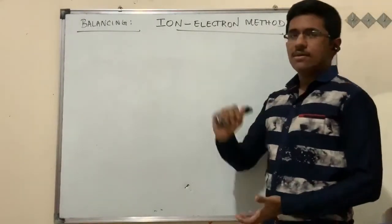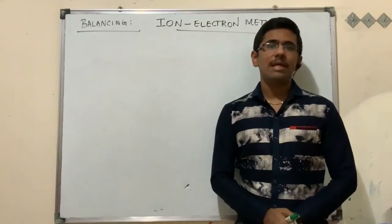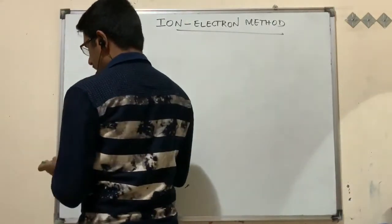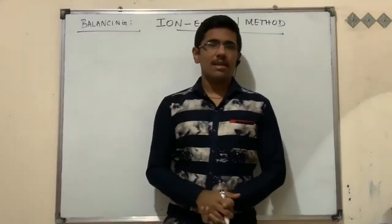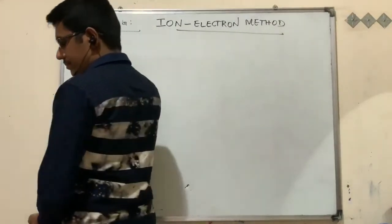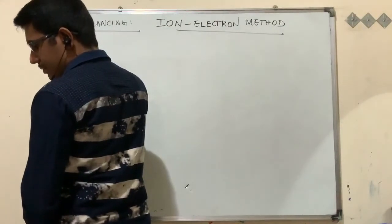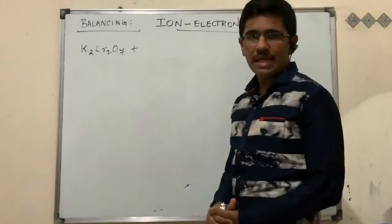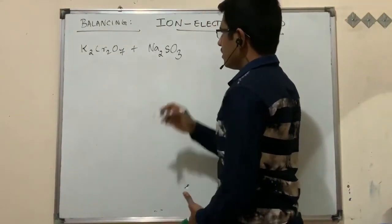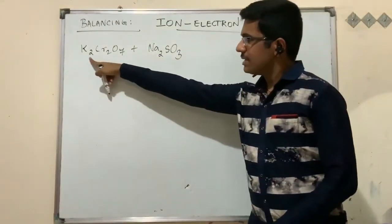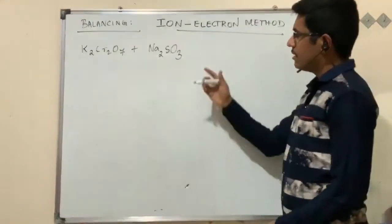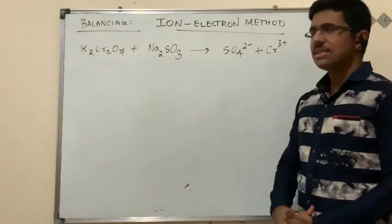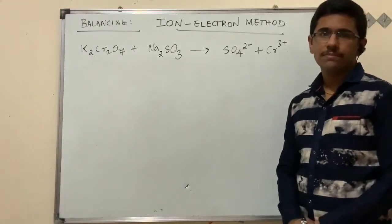We are going to see the ion-electron method using a particular example. In this type of balancing, we mainly use electrons and ions carrying charges. We'll start with problem number 8.8 from your example section. The question is to balance a chemical reaction using the ion-electron method. Potassium dichromate (K₂Cr₂O₇) reacts with sodium sulfite (Na₂SO₃), producing sulfate ion (SO₄²⁻) and chromium ion.